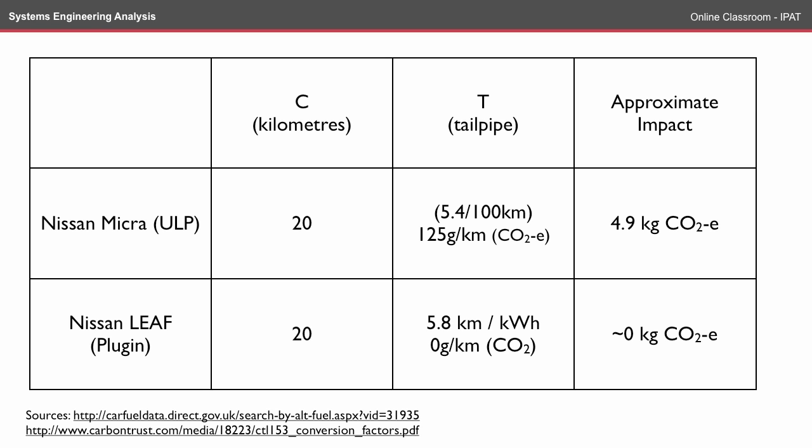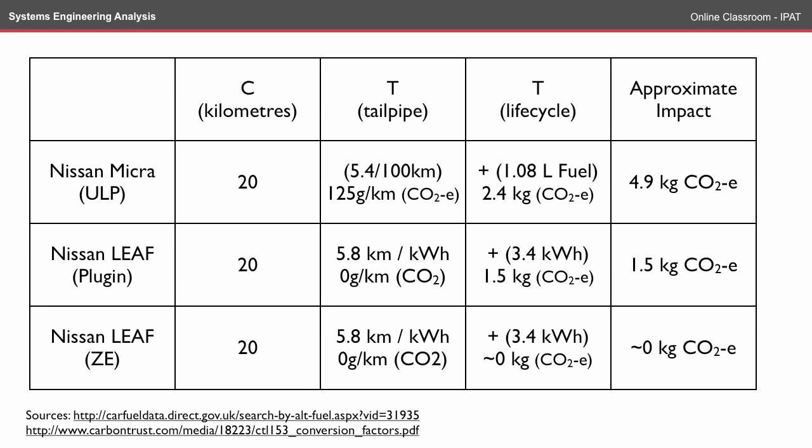But you could argue that this isn't a fair comparison, because we haven't looked at how the electricity was generated. So, if we consider the life cycle — the carbon dioxide equivalents for the life cycle part — we need to add an extra 2.4 kilograms of carbon dioxide equivalent for the production of 1.8 litres of fuel.